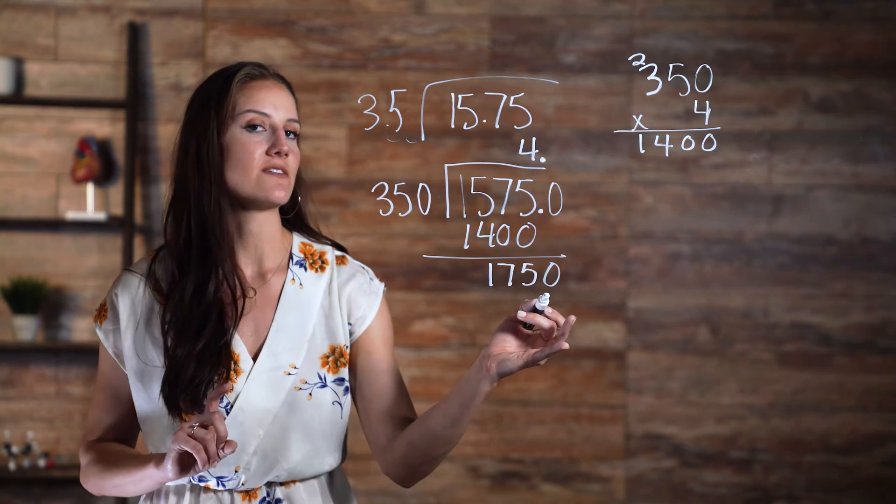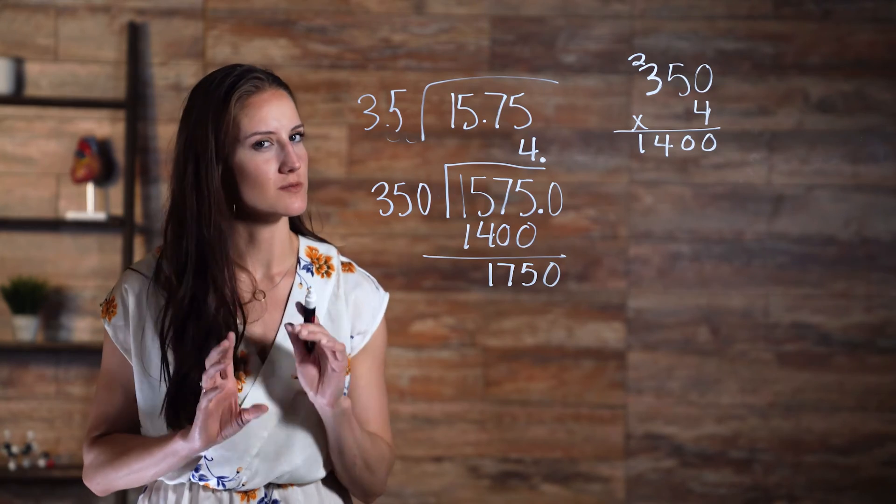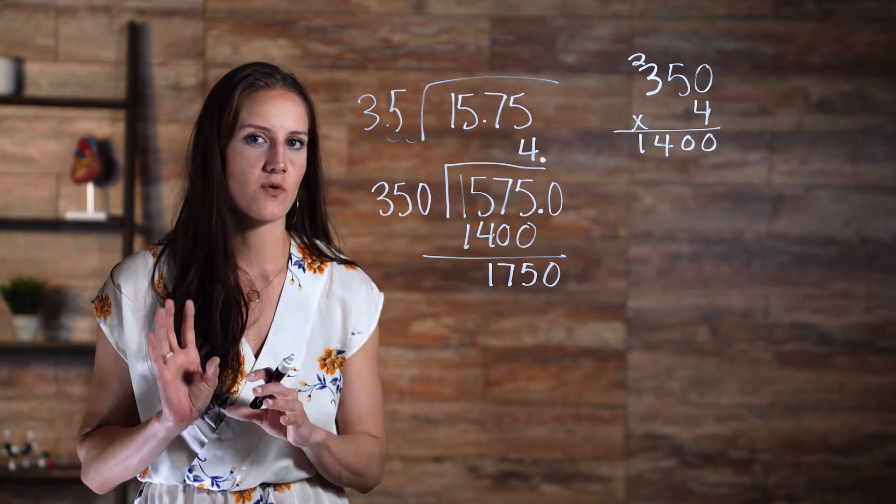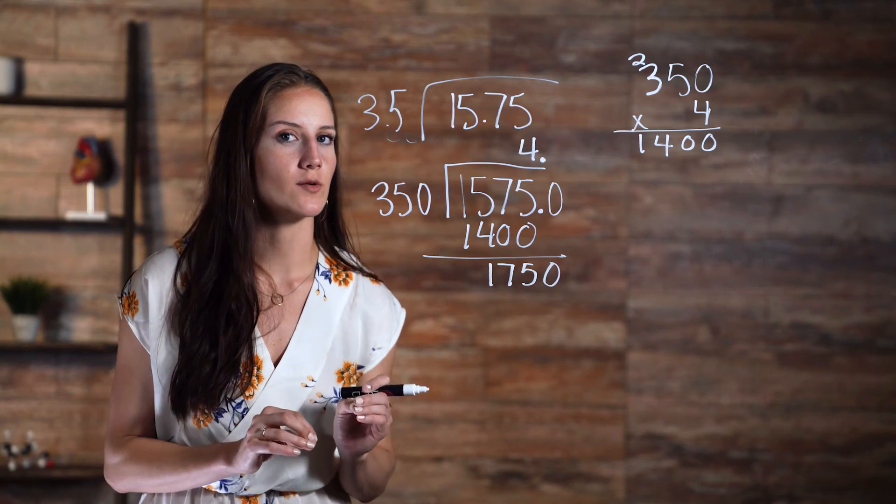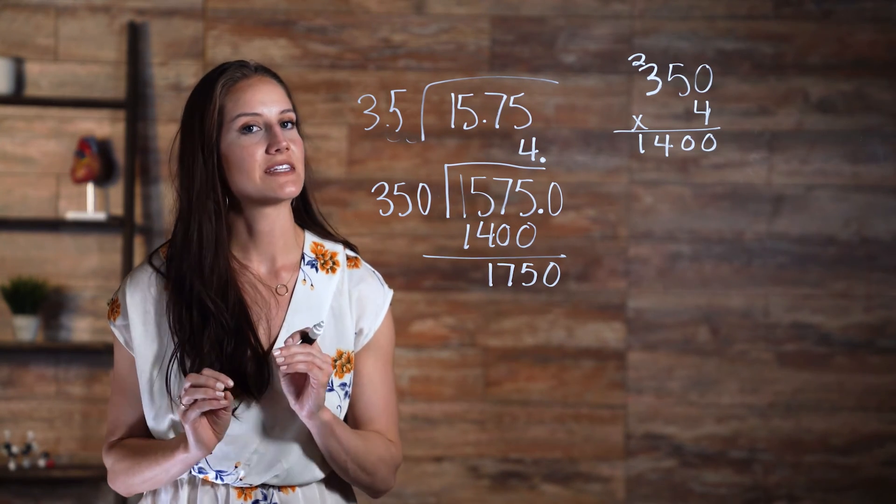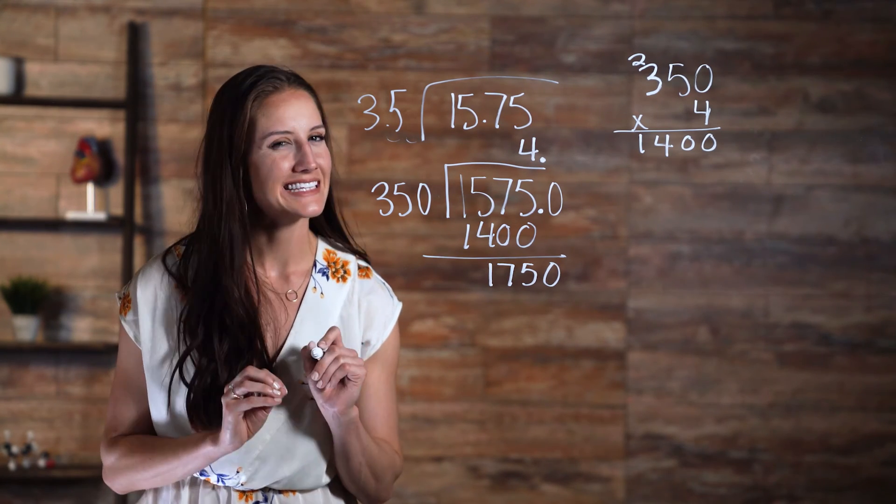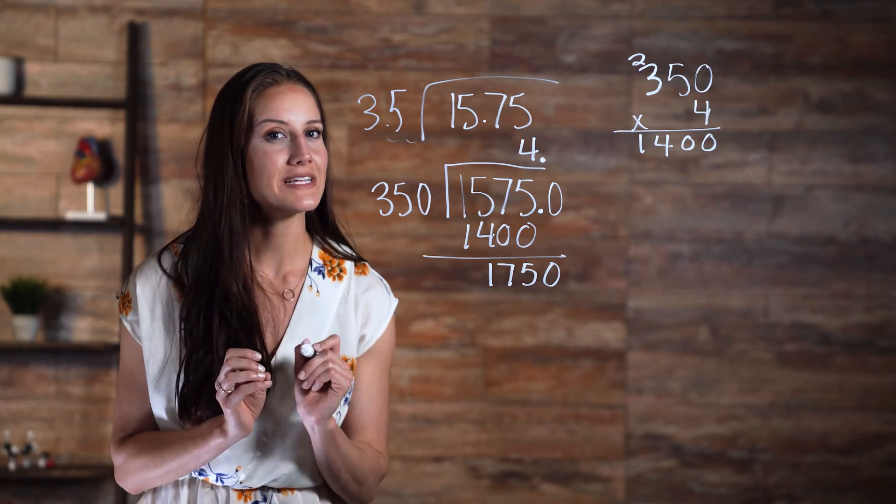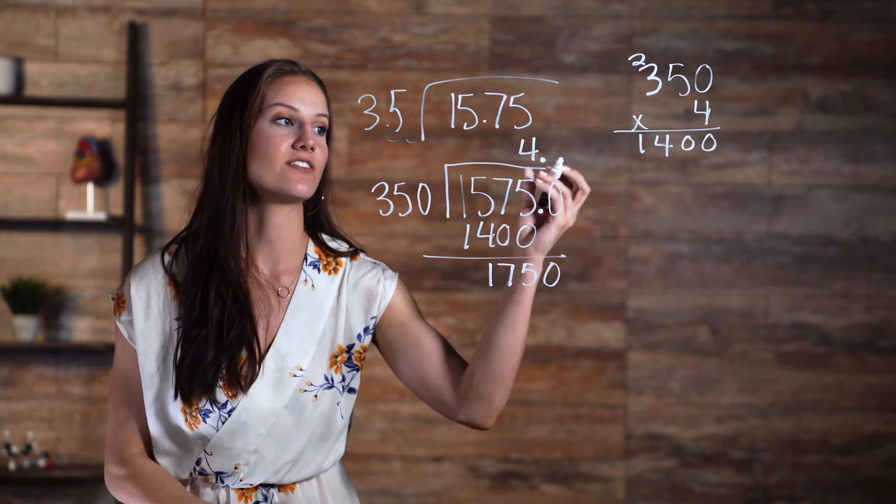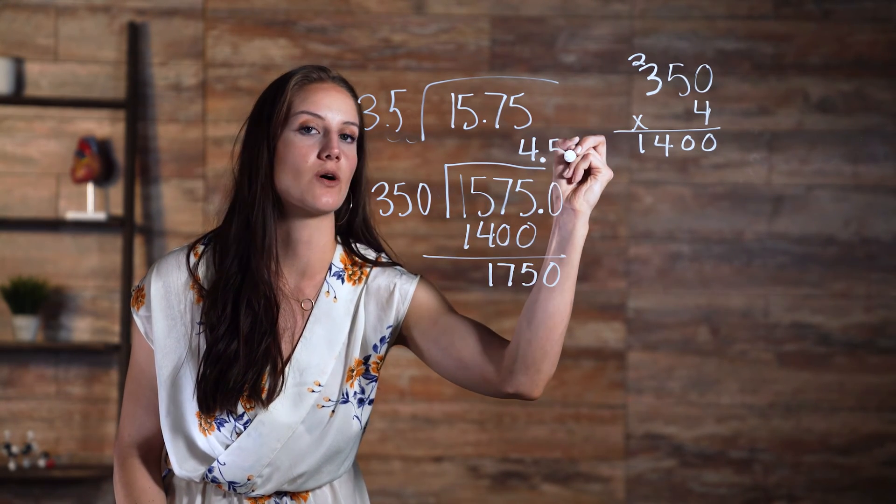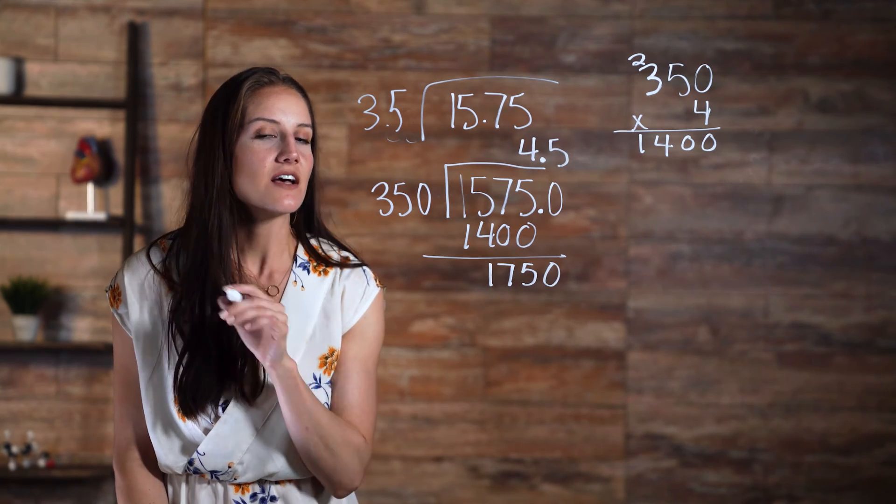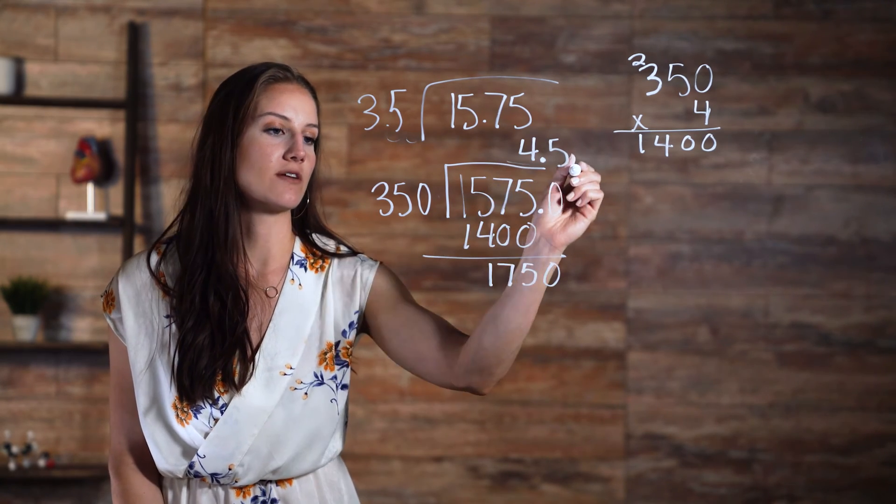Now we divide 1,750 by 350 with some trial and error. Given that we saw before that 350 times 4 was 1,400, we can see that 350 times 5 is going to give us exactly 1,750, which means that we add a 5 right after the decimal place right next to our 4. This gives us a final answer of 4.5.